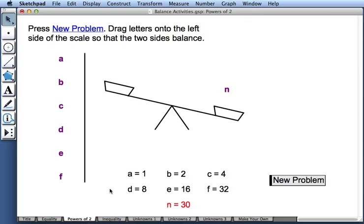The next activity in the collection uses letters A through F instead of shapes. Here, our goal is to balance the N that sits on the right side of the balance. Currently, it has a value of 30, and these are the values of the other six letters.